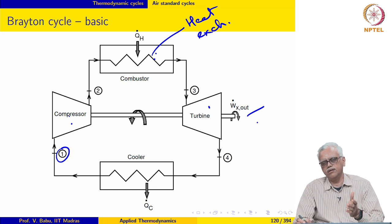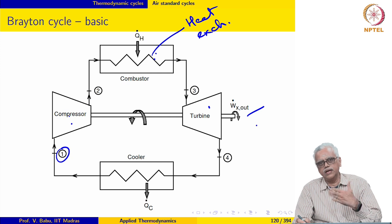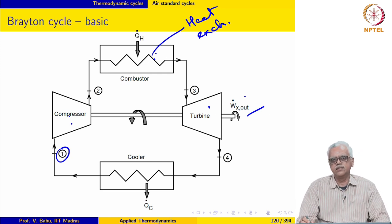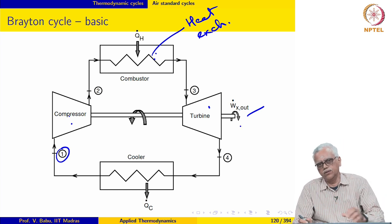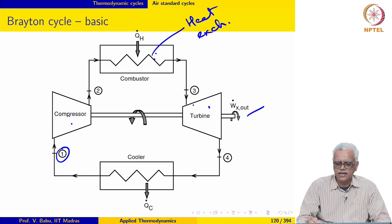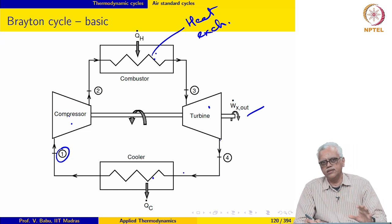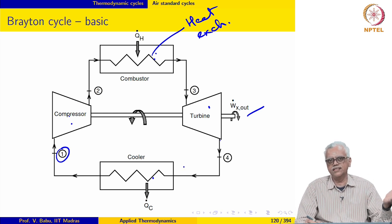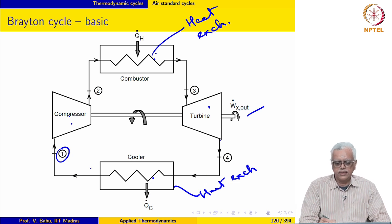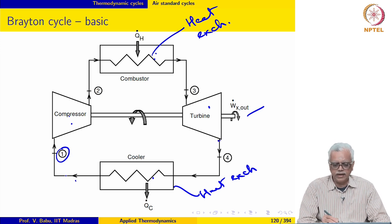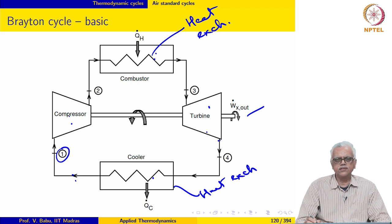If it is a land-based application, the rest will be utilized to run a generator for producing power. Otherwise, high enthalpy gases are taken to the nozzle for thrust generation. After undergoing expansion, the air comes out and is then taken to a cooler which plays the role of a condenser — similar to what we had in the Rankine cycle. Heat is rejected to the ambient, so the temperature of the air is about 300 Kelvin when it comes out of the cooler, and after expansion through the turbine the pressure is also 100 kilopascal. So the cycle can be repeated.